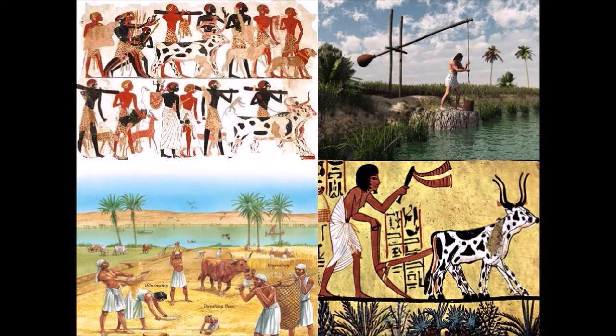Agriculture and Trade. The Egyptians cultivated wheat, barley, millet, vegetables, fruits, peppers, and cotton. They domesticated cattle, sheep, goat, and pig. They had trade relations with other regions.